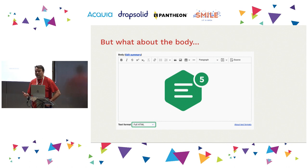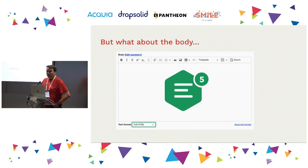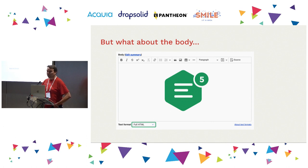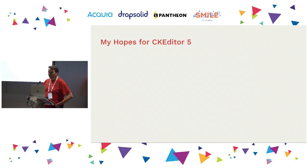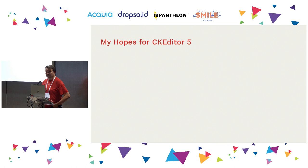We chose CKEditor 4 because of its accessibility, and some of the stuff with CKEditor 5 has proven to be a lot less accessible than CKEditor 4. A lot of what we had hoped to be there — guidelines and models for more accessible plugins for CKEditor — we're not seeing yet in CKEditor 5 in terms of ways of implementing that. My hopes are for CKEditor 5, and I'm very glad that CKEditor is here and sponsoring this conference — it's a really excellent open source tool. But this is about how we improve the authoring experience.